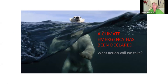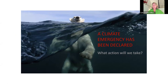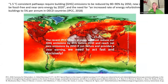A climate emergency has been declared, so we as architects — what action are we going to take? A recent IPCC report stresses we have to reduce our greenhouse gas emissions by almost half before 2030 and reach net zero emission by 2050, if not before. The message in the report gives a very clear warning that we need to act fast and decisively.